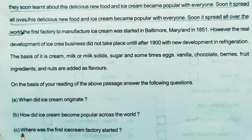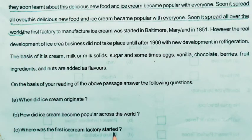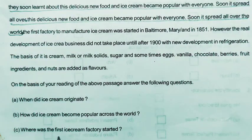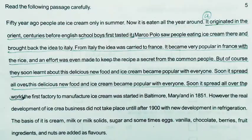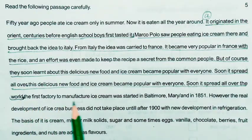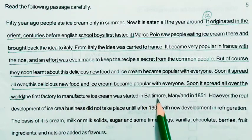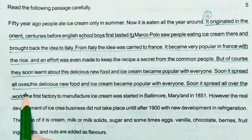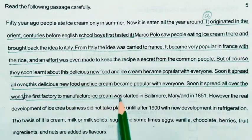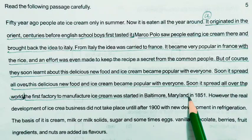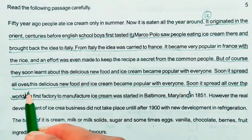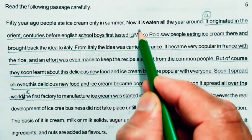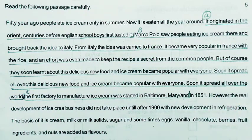Question 3: Where was the first ice cream factory started? Answer: The first factory to manufacture ice cream was started in Baltimore, Maryland. This is our answer for question number 3.